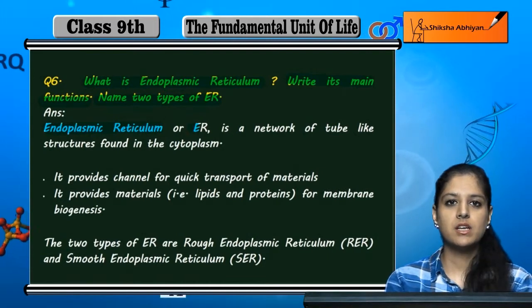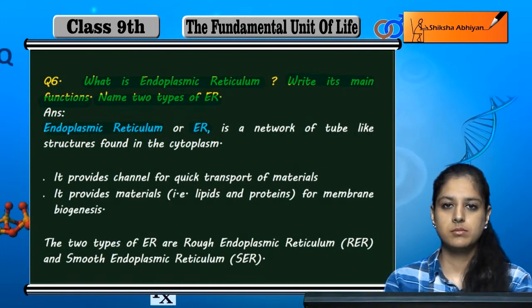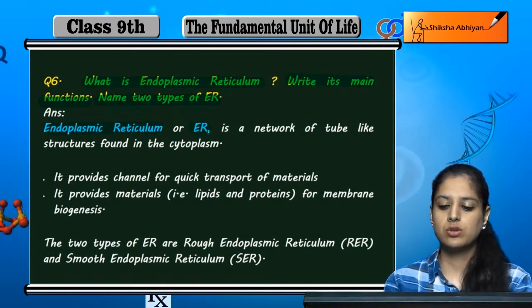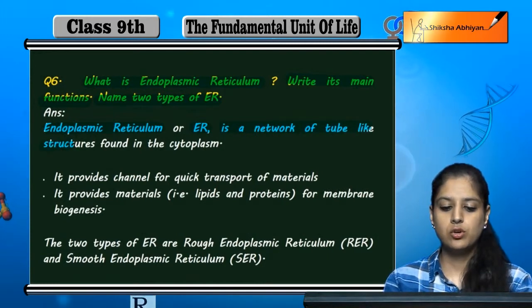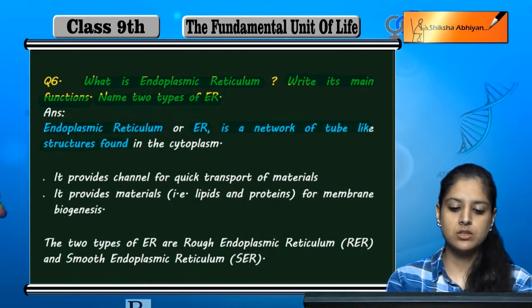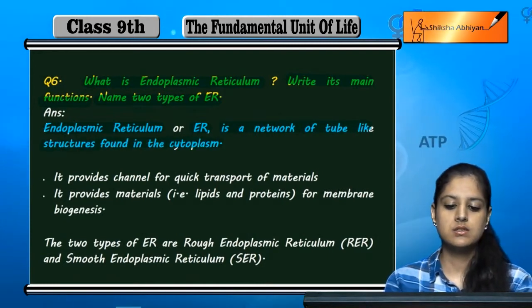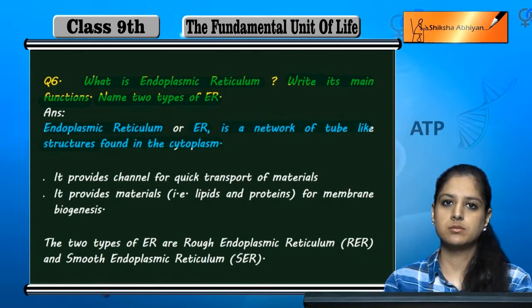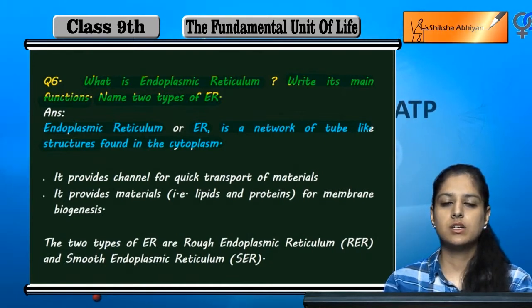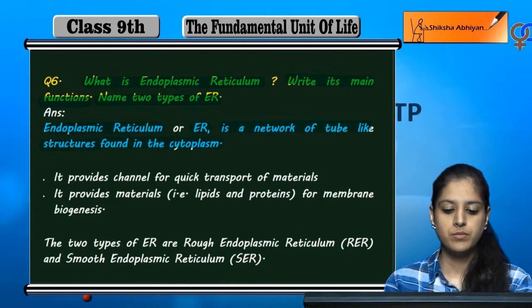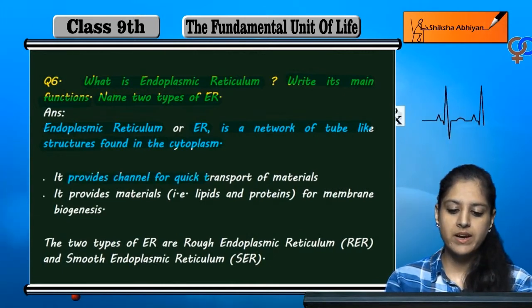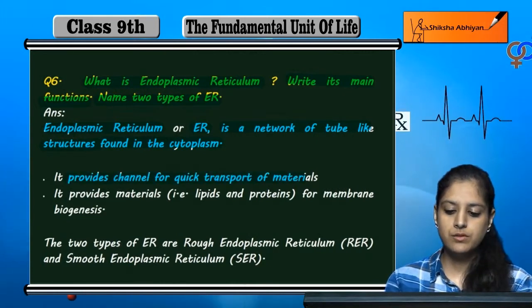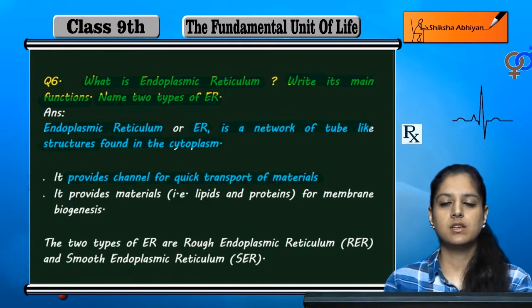Endoplasmic reticulum or ER is a network of tube-like structures found in the cytoplasm. It provides channels for quick transport of materials.